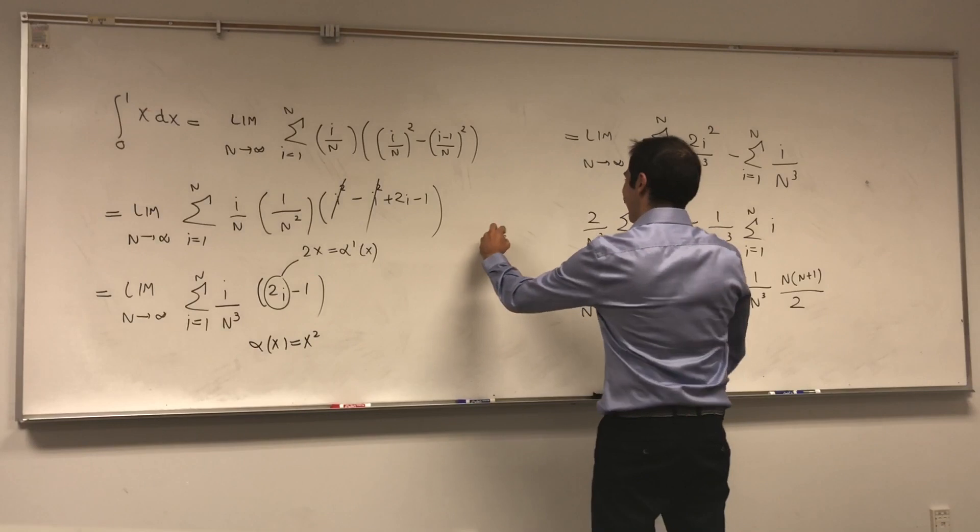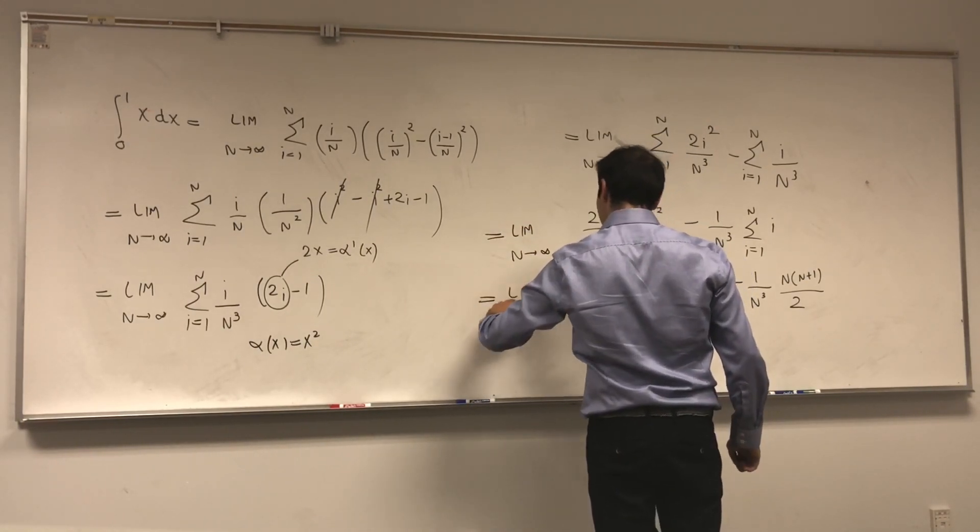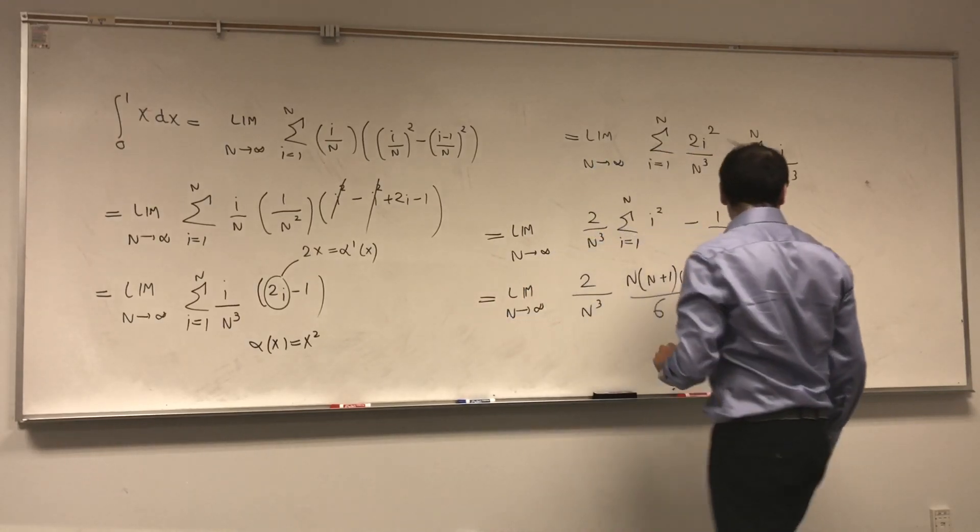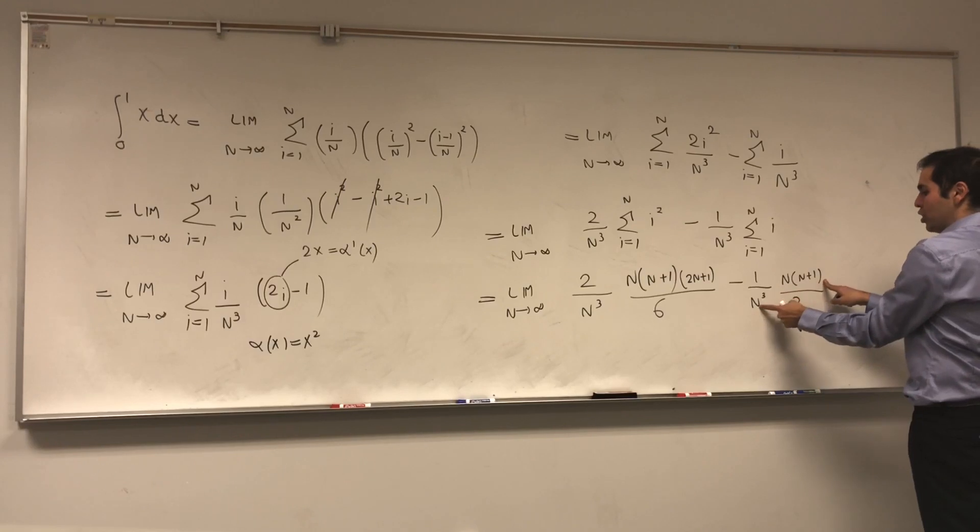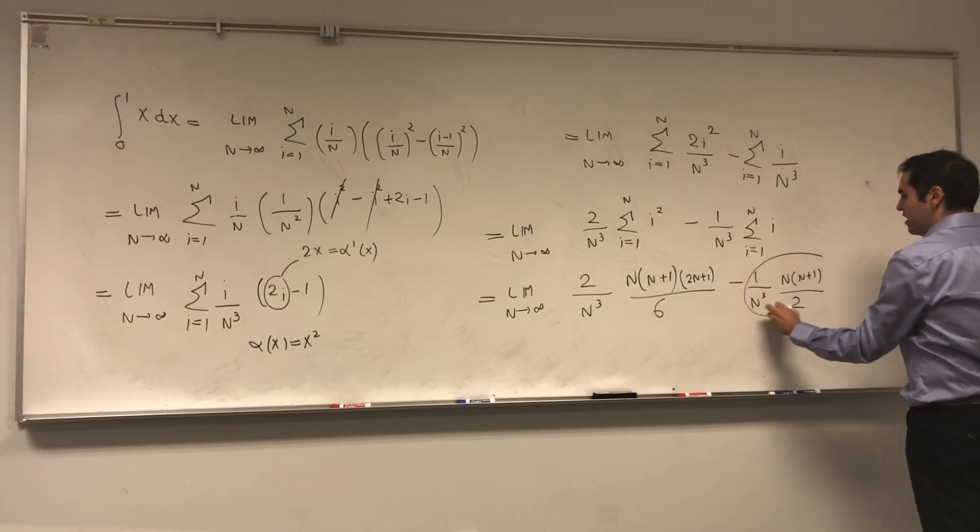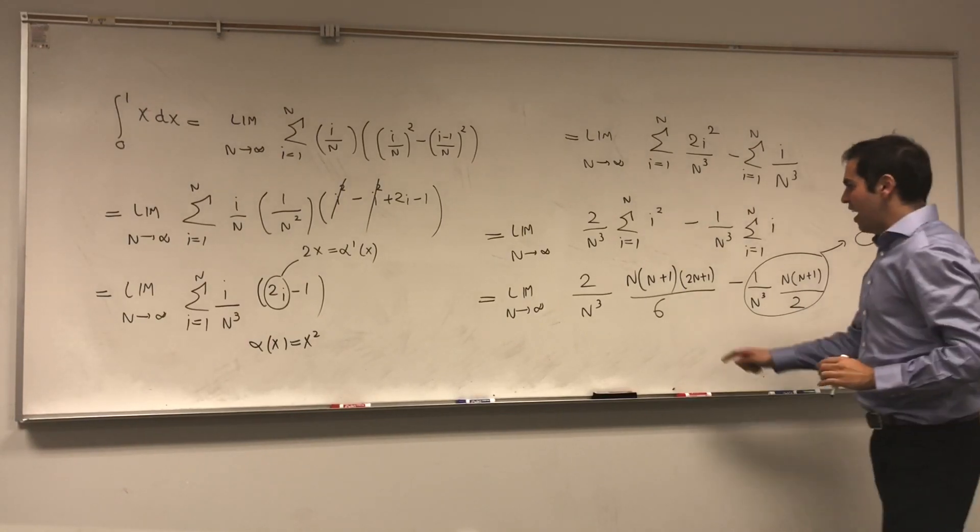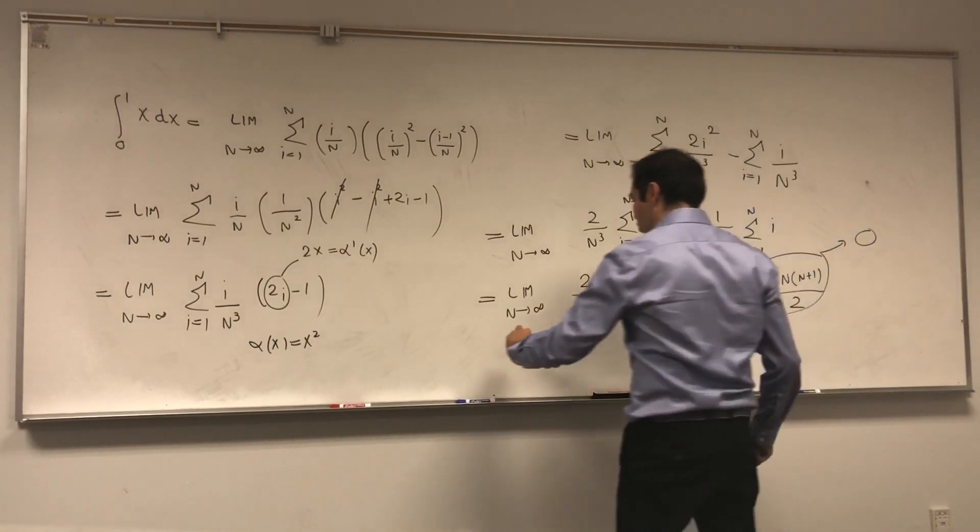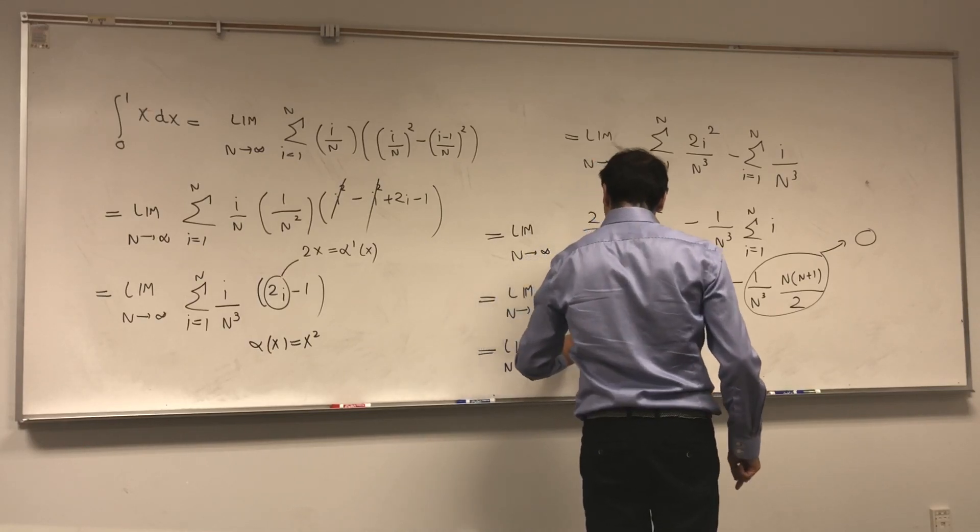I totally forgot the limits. So sometimes you get carried away. So limit n goes to infinity. Limit n goes to infinity. The nice thing is this is of degree 2 and this is of degree 3. So in fact this junk goes to 0.